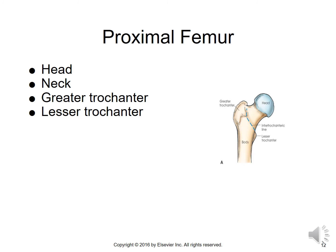Here we have an image of the proximal femur, the head of which fits into the acetabulum. We have the neck of the femur and the two trochanters — the greater and the lesser trochanter. Anteriorly, what we're looking at here is the intertrochanteric line, a ridge of bone between the two trochanters. Posteriorly, it would be the intertrochanteric crest.